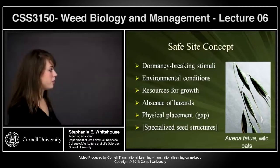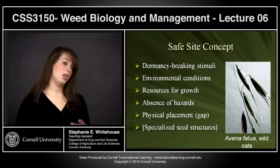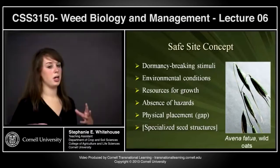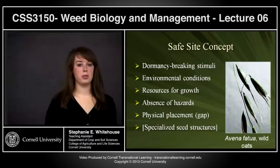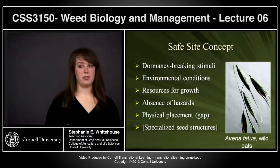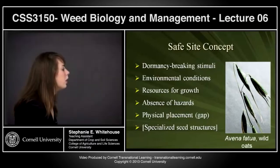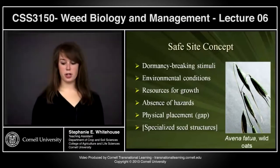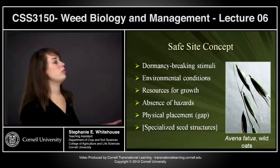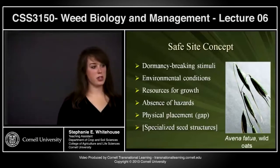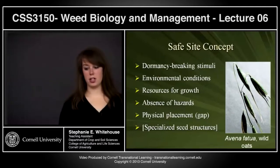The safe site concept also includes absence of hazards such as insects or diseases, and physical placement — the orientation of the seed within the soil and whether it has room to grow. Specialized seed structures also matter; for example, wild oat awns spin and orient the seed downward into the soil when they contact water.